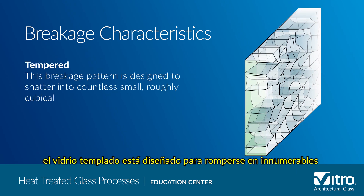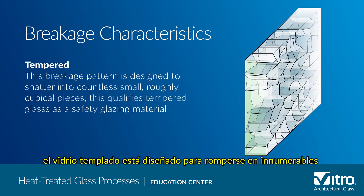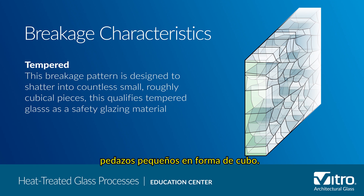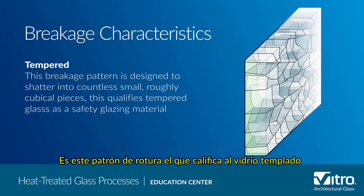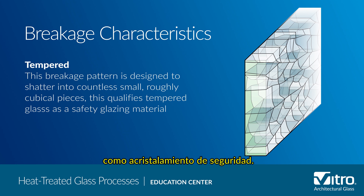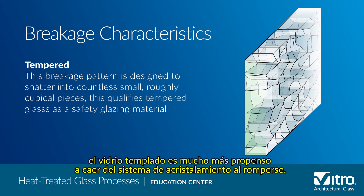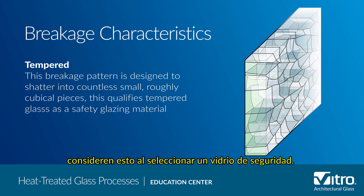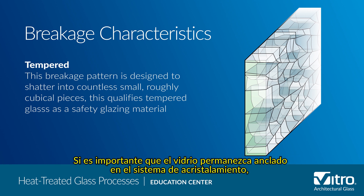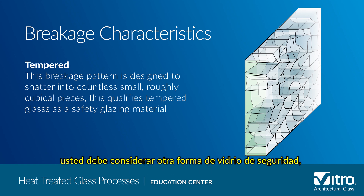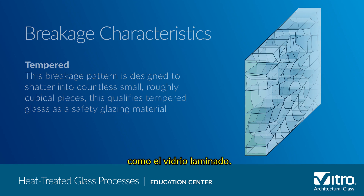On the other hand, tempered glass is designed to shatter into countless small, roughly cube-like pieces. It is this break pattern that qualifies tempered glass as a safety glazing material. However, because of this break pattern, tempered glass is much more likely to fall from the glazing system when it breaks. Therefore, it is essential for design professionals to consider this when selecting a safety glass. If it's important for the glass to stay anchored in the glazing system, you should consider another form of safety glass, such as laminated glass.